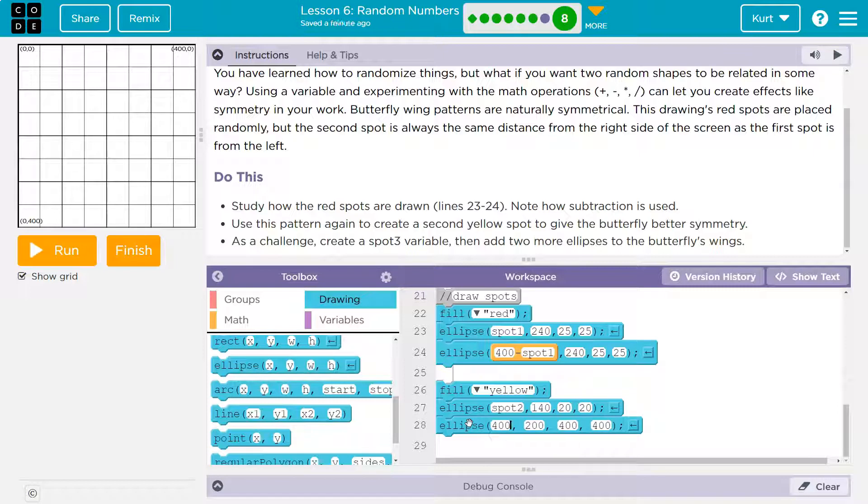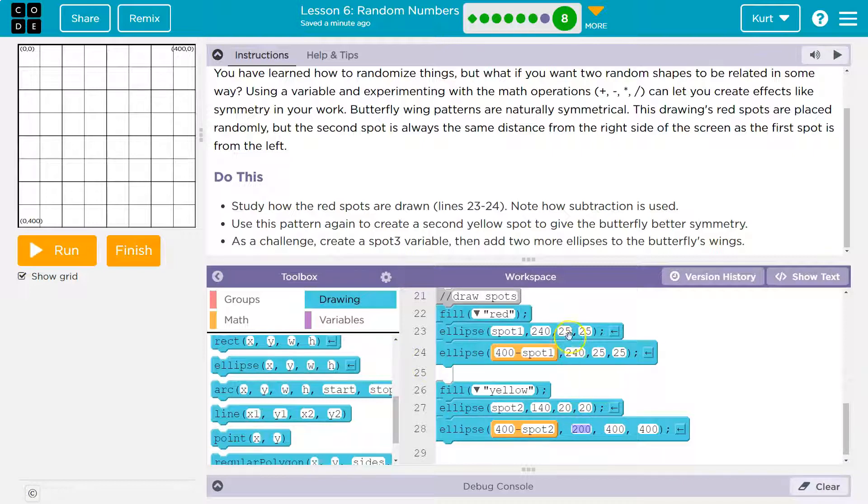So now down here, we can do 400 minus spot two. Okay. And now what about here? Notice they did 25, 25. Well, here they did 20, 20. And then what did they do?